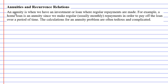In this video, we're going to talk about annuities and recurrence relations. We'll start by talking about an annuity. An annuity is when we have an investment or loan where regular repayments are made. I'm going to demonstrate this using two examples.